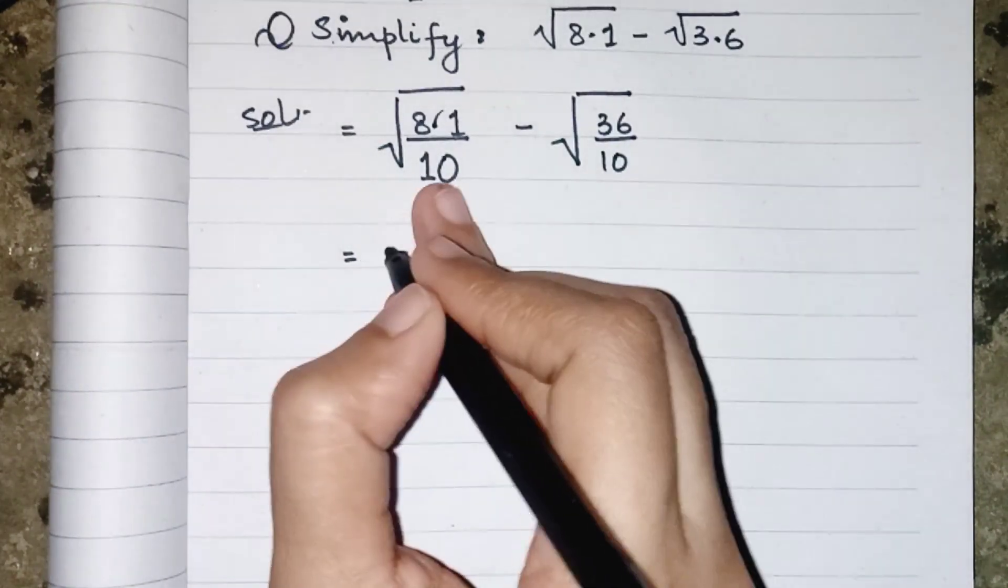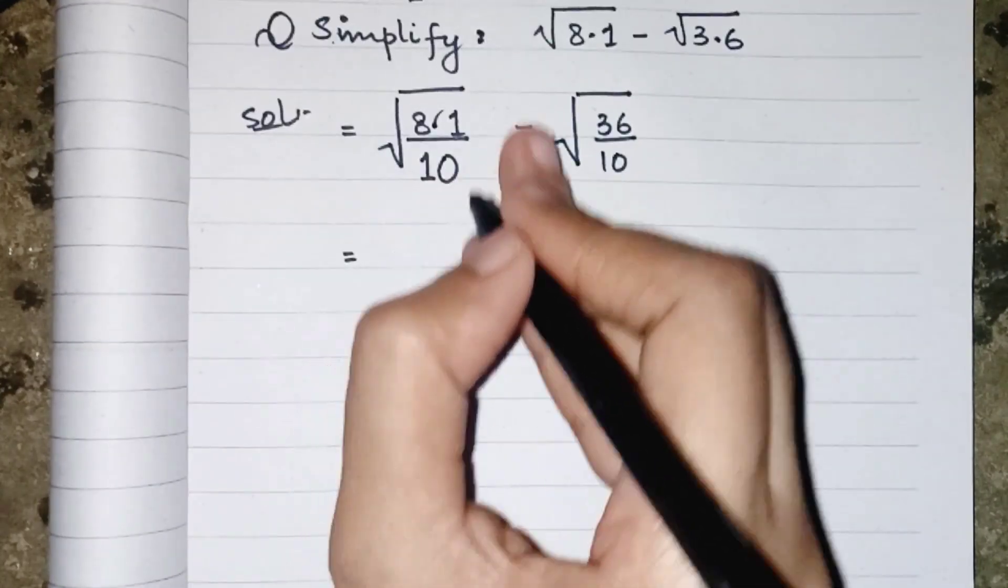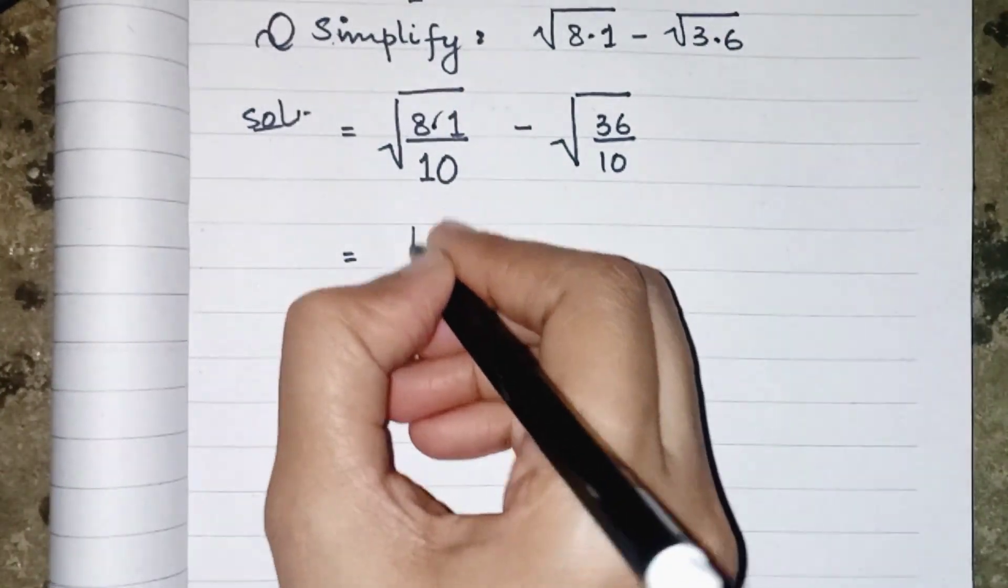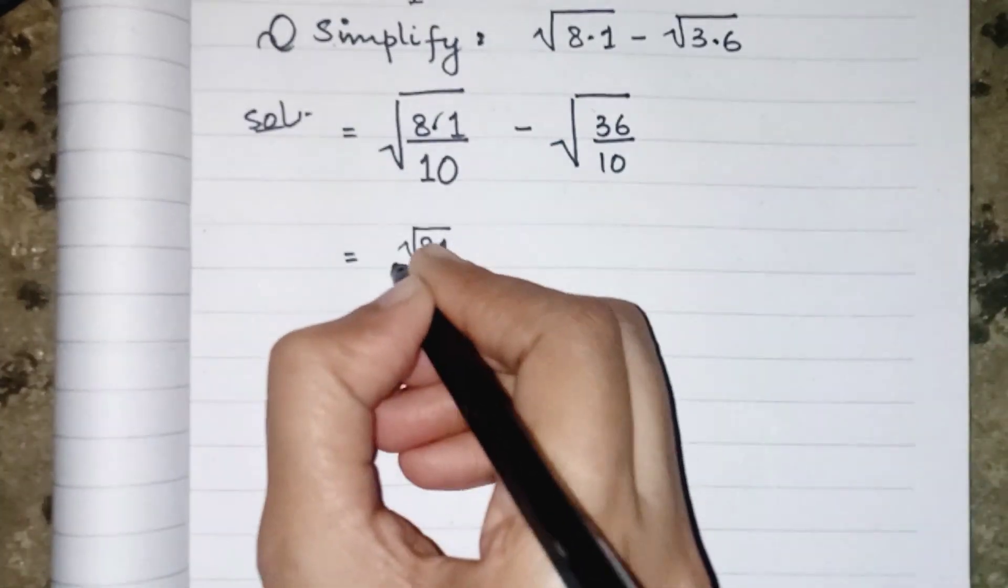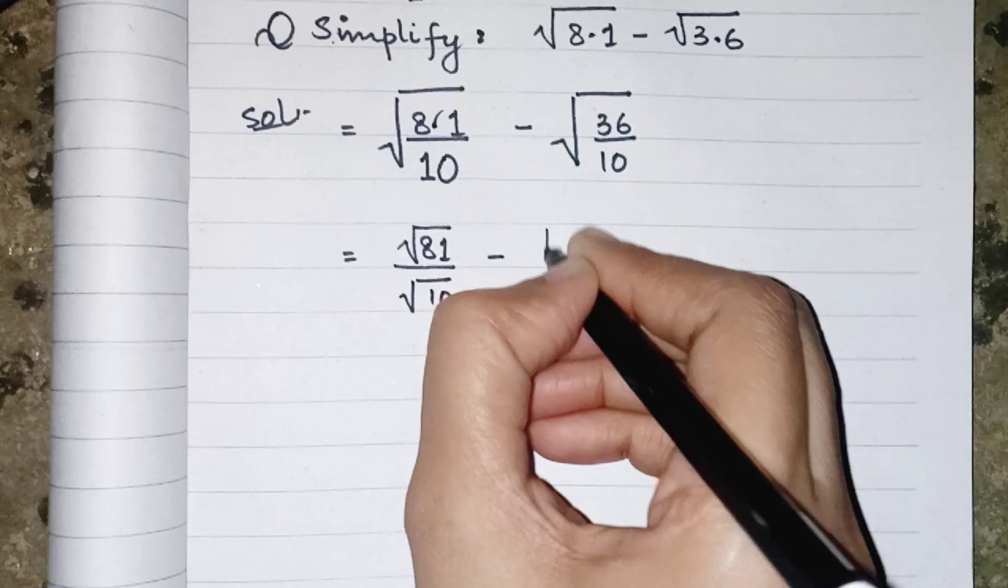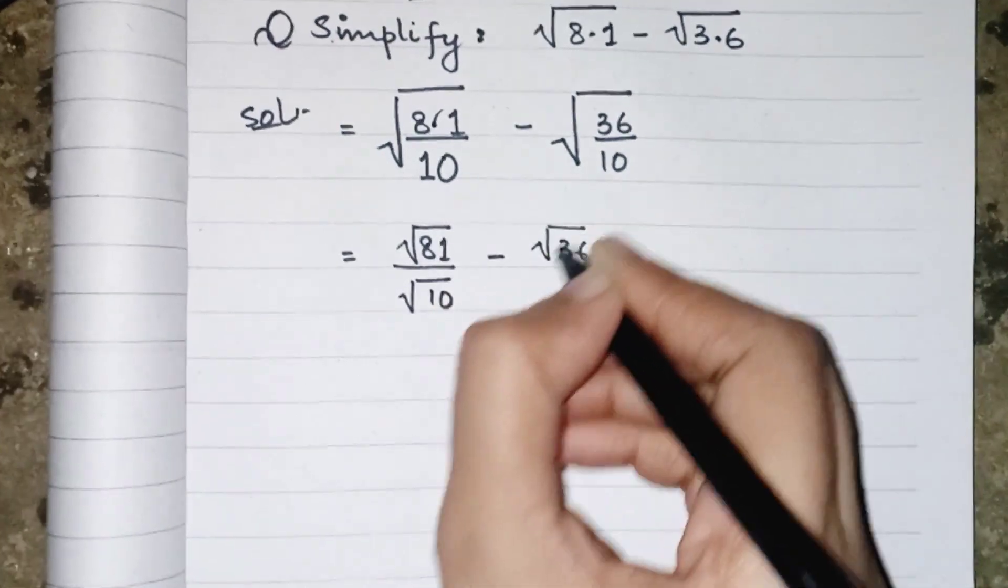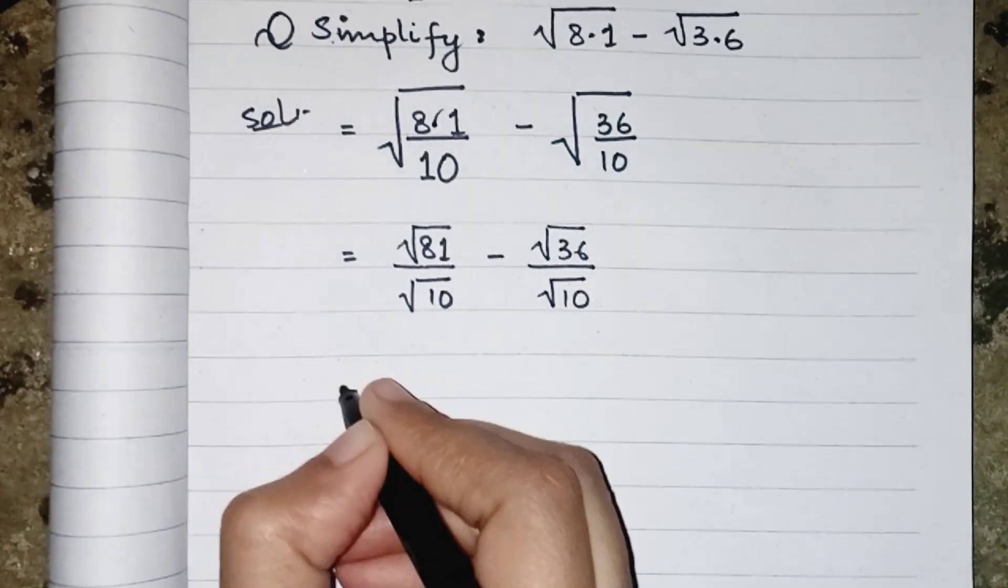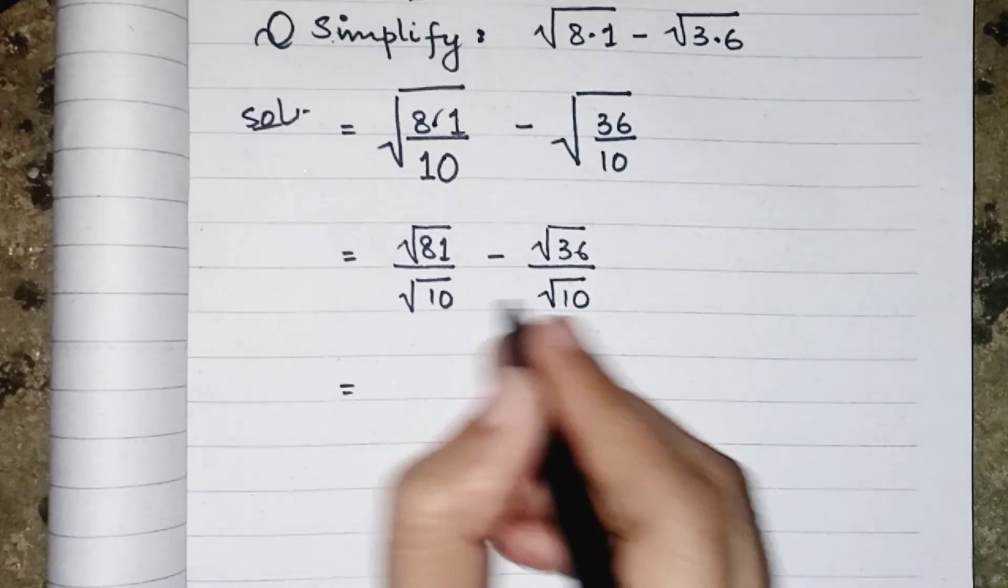Now what we have to do is just give root to each numerator and denominator of both terms, so we can write it as root 81 upon root 10 minus root 36 upon root 10. So to subtract, we have to take LCM.